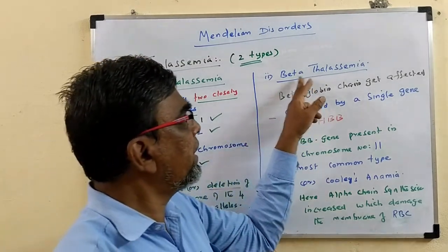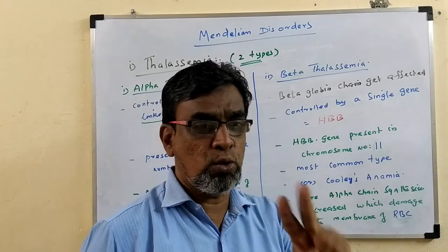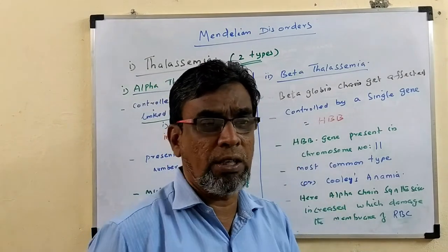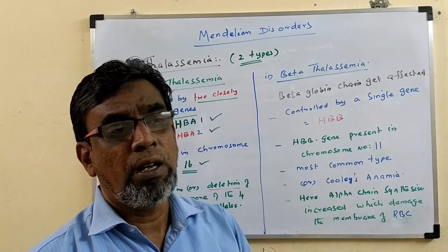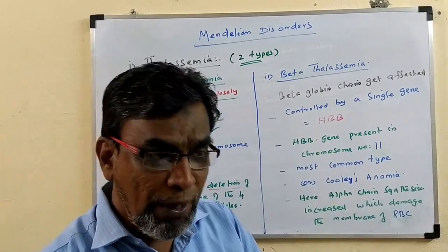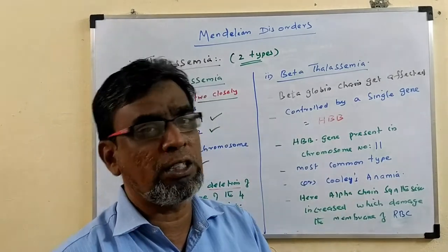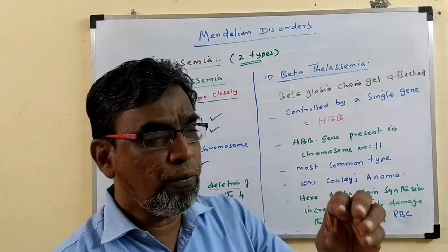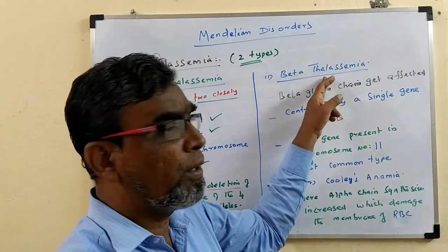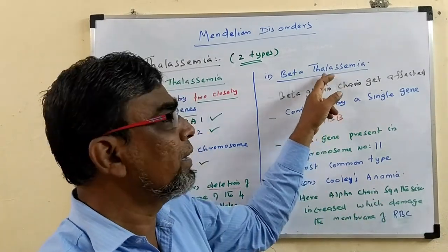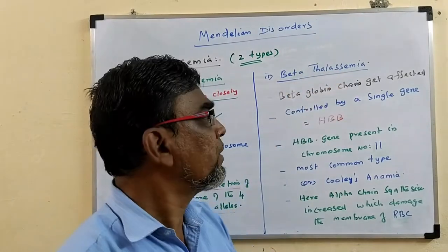The second one is Beta Thalassemia. We know that there are two beta chains in hemoglobin. If anything happens to these two beta chains — any infection, deletion, or mutation takes place — because of deletion or mutation in the beta chains of hemoglobin, a disease or disorder occurs. This is called Beta Thalassemia.